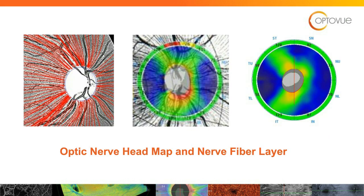Looking at the optic nerve head map and nerve fiber layer — that's where a lot of the bread and butter is for those of us who've been using OCTs. But we always have to go back and look at the anatomy. On the right is the printout we look at daily, on the left is a representation of true anatomy, and in the middle is almost an augmented reality picture where the scan is superimposed on the anatomy. That's really what we're looking at — it's not a magical printout, it's referencing the anatomy.